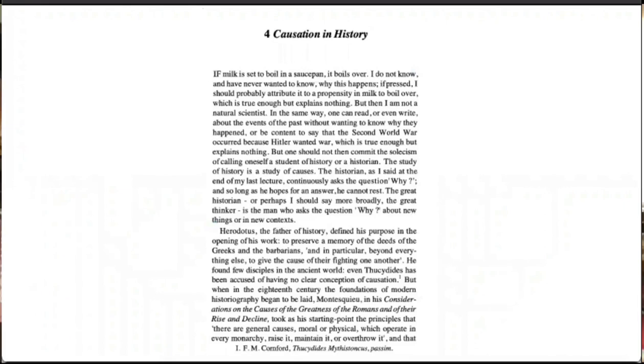What the historian undertakes to do is to look into the causation in the event that she or he has chosen to study. E.H. Carr devotes one of the chapters in What is History? to this very topic — chapter four on causality in history. In that chapter, he illustrates his point using some anecdotes. One of them is an imagined incident, which goes like this short video clip.